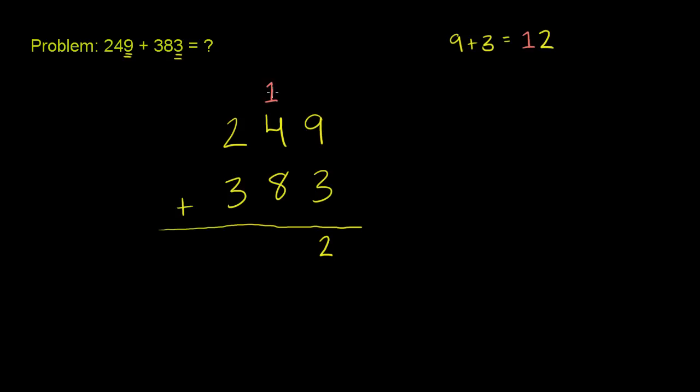And now we want to add this 10 plus 40 plus 80. It looks like we're adding a 1 to a 4 to an 8, but these are really in the tens place. So this is really a 10, a 40, and an 80. But if you just think about the process, you just take your 1, you add it to your 4 and your 8.